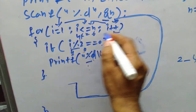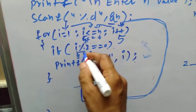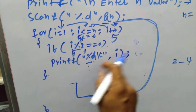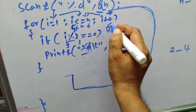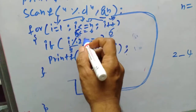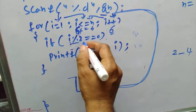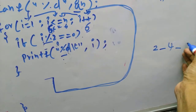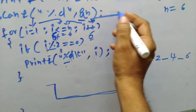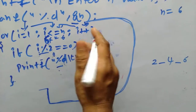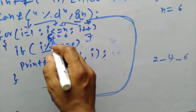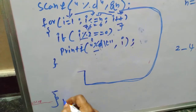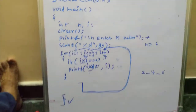i becomes 5. 5 <= 6 is true, but 5 % 2 gives remainder 1, so condition is false and it does not print. Then i becomes 6. 6 <= 6 is true, and 6 % 2 gives remainder 0, so it prints 6. Then i becomes 7. 7 <= 6 is false, so the loop ends and the program terminates.